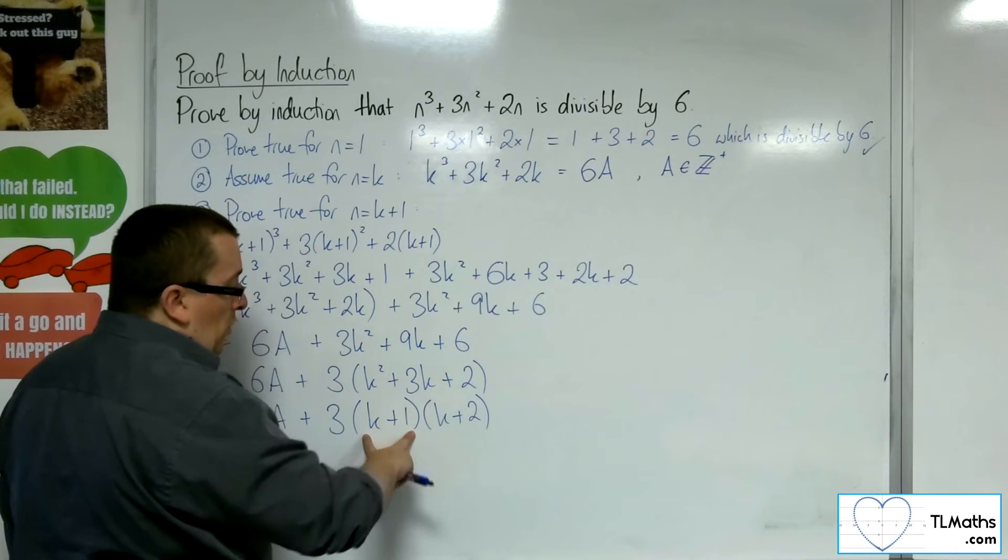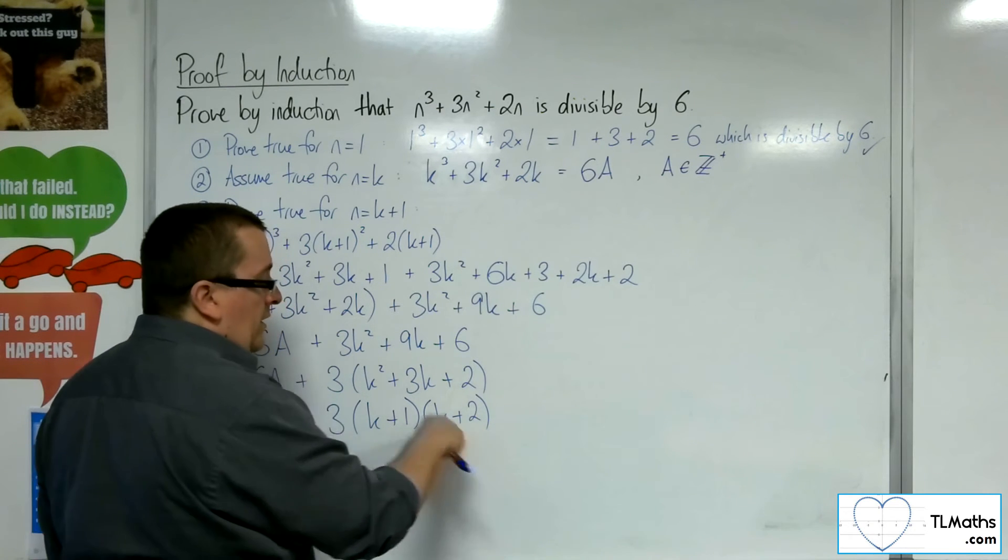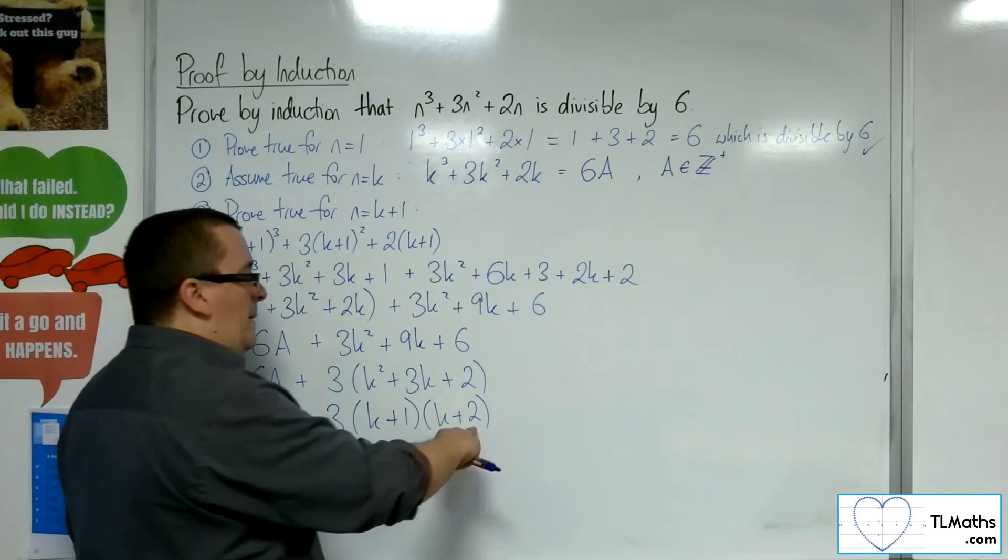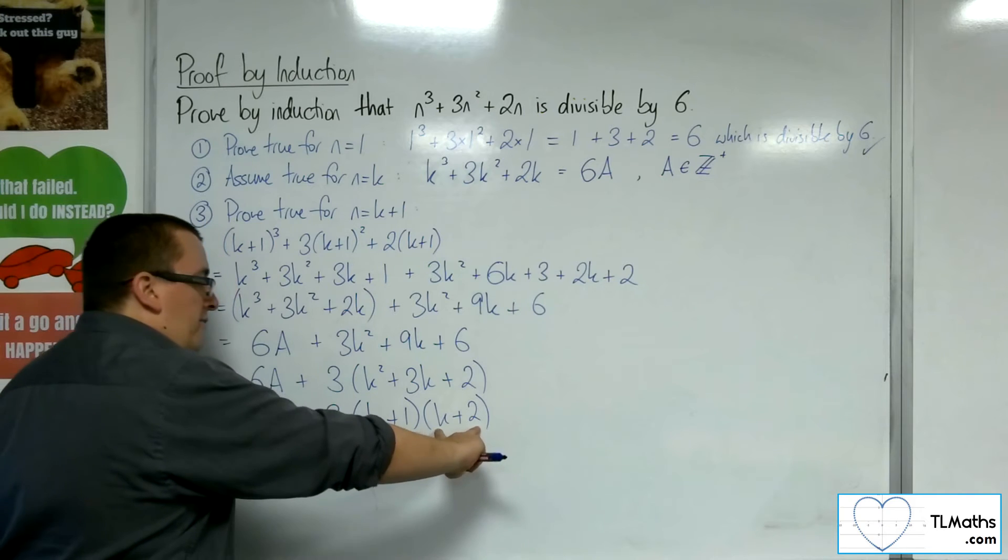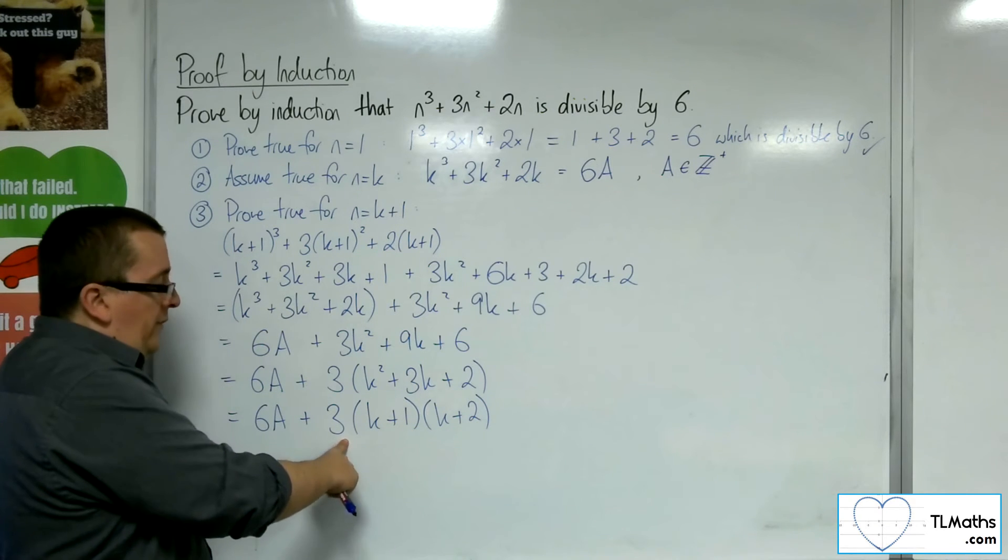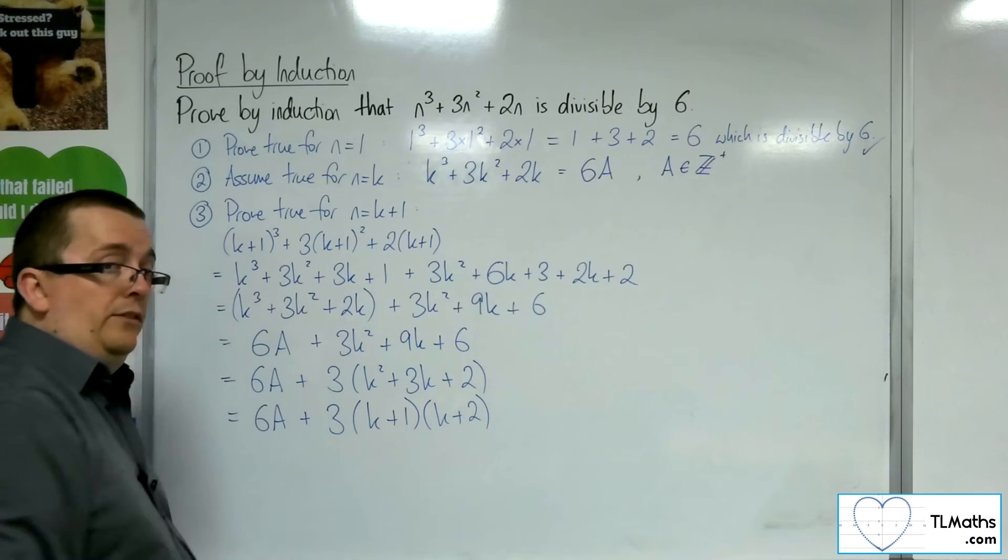If k plus 1 is odd, then k plus 2 will be even, because it's one more, because numbers go odd, even, odd, even. And so, I'd be able to factor the 2 out of that term, and I'd have 3 times 2, so 6. And so, this must have a factor of 6.